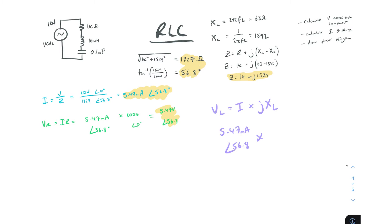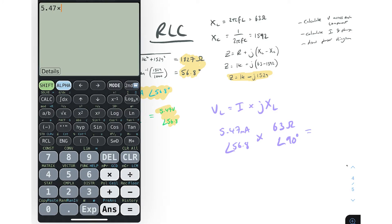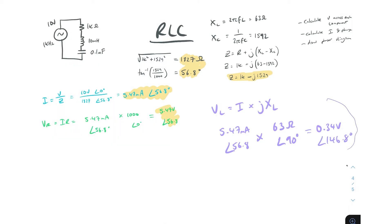Now the voltage across the inductor: that's I times jXL. So 5.47 milliamps at 56.8 degrees multiplied by 63 ohms. The inductor's angle is plus 90 degrees. So 5.47 milliamps times 63 ohms divided by 1000 gives 0.34 volts, at an angle of 90 plus 56.8 — that's 146.8 degrees.